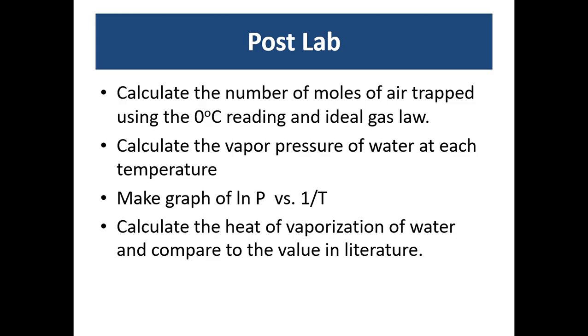So your post lab will consist first of all calculating the number of moles of air that are trapped in the air bubble and we're going to use the reading at zero degrees celsius and the ideal gas law to calculate how many moles of air are in there. At the higher temperatures there is no change in the moles of air. What changes is the partial pressure of that air which we need to subtract from the total pressure so we can calculate the actual vapor pressure of water at each temperature. Once you have the data collected you'll make a graph of the natural log of P versus the reciprocal of the temperature and then using the line of best fit the trend line and its slope you will calculate the heat of vaporization of water and then calculate what is the percent error. How does it compare to the value reported in the literature?